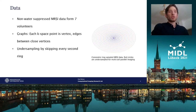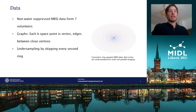Undersampling was performed by fully sampling the inner six rings and then skipping every second of the outer rings. The output data for training and evaluation was computed by first transforming the fully sampled data to image space where SPIRIT sensitivity maps were applied, and then back to k-space.